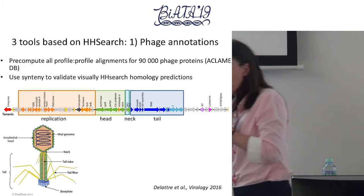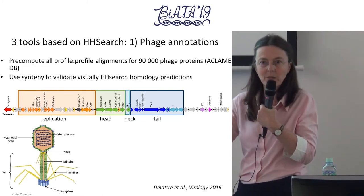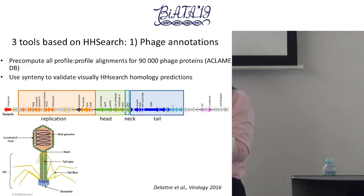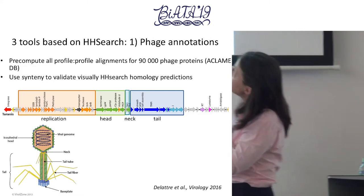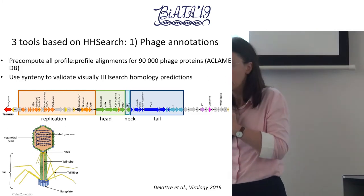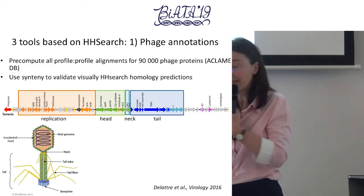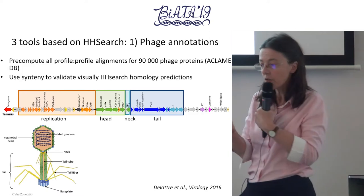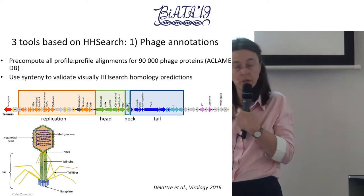We developed three tools based on HHsearch. The first was really to try to get new annotations. Because the tool takes some time to make alignments, we needed to pre-compute all profile-to-profile alignments for a given set of phage proteins — at the time about 90,000 proteins based on a database called ACLAME. Then because HHsearch predicts very distantly related signals, we wanted to confirm predictions by using synteny display to validate visually what HHsearch predicted.